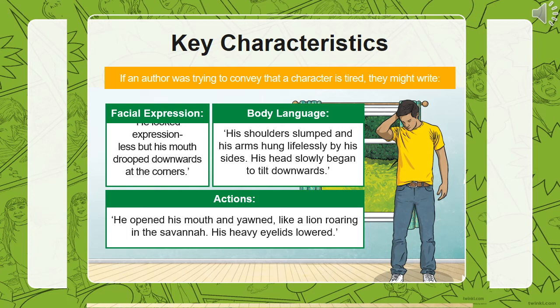'He looked expressionless, but his mouth drooped downwards at the corners. His shoulders slumped and his arms hung lifeless by his side. His head slowly began to tilt downwards. He opened his mouth and yawned like a lion roaring in the savannah. His heavy eyelids lowered.' These are all ways to express that a character is tired without saying 'the boy was tired' — this is far more descriptive and helpful for the reader.